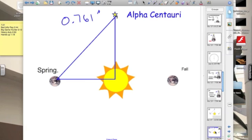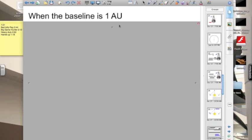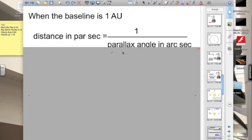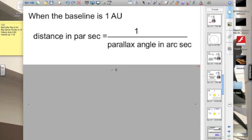Let's take a look at Alpha Centauri. With a baseline of 1 AU, our parallax angle is 0.761 arc seconds. Here's what we can do now. When the baseline is 1 AU, we can use a special unit. We can measure the distance, what we call parsecs, and parsecs is equal to 1 over the parallax angle in arc seconds.